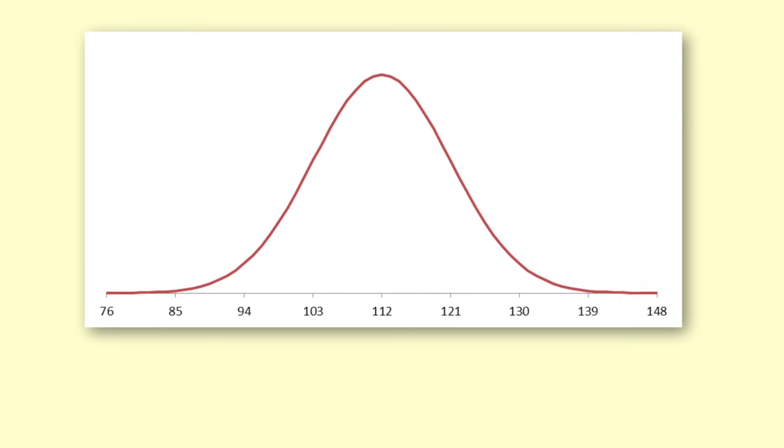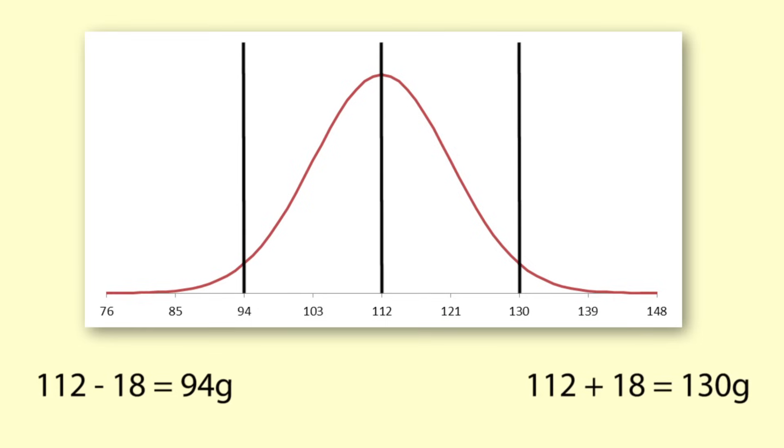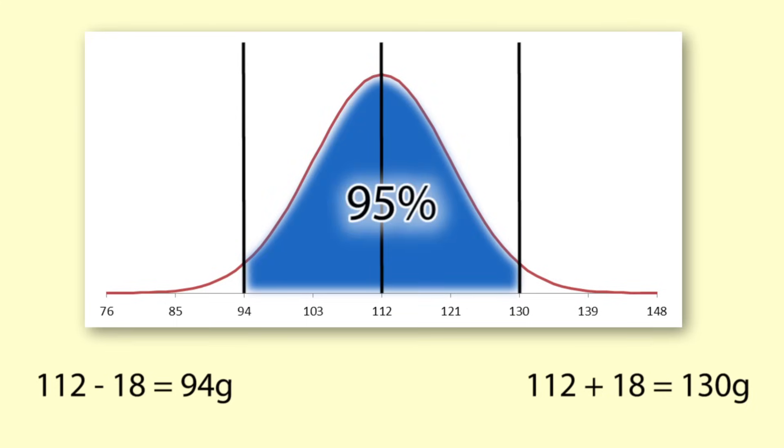So we say that 95%, or most, ice creams weigh between 112 minus 18, which is 94 grams, and 112 plus 18, which is 130 grams. You can see that 95% of the area under the graph is between 94 grams and 130 grams.